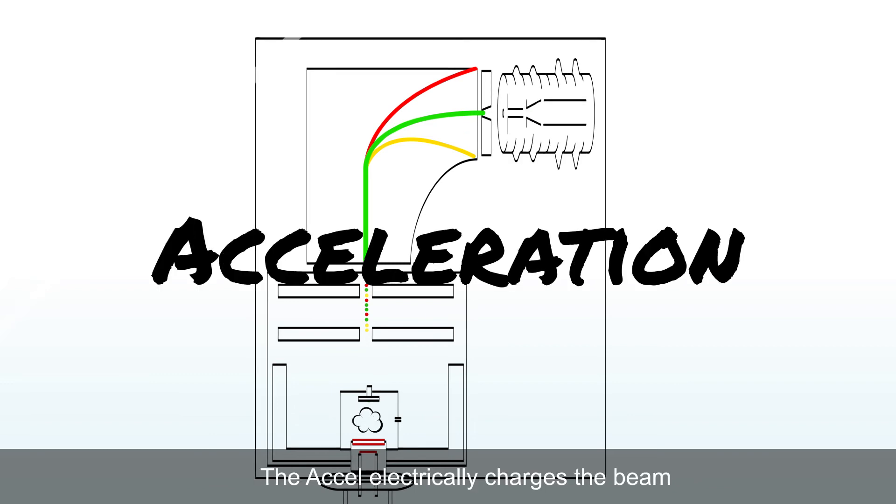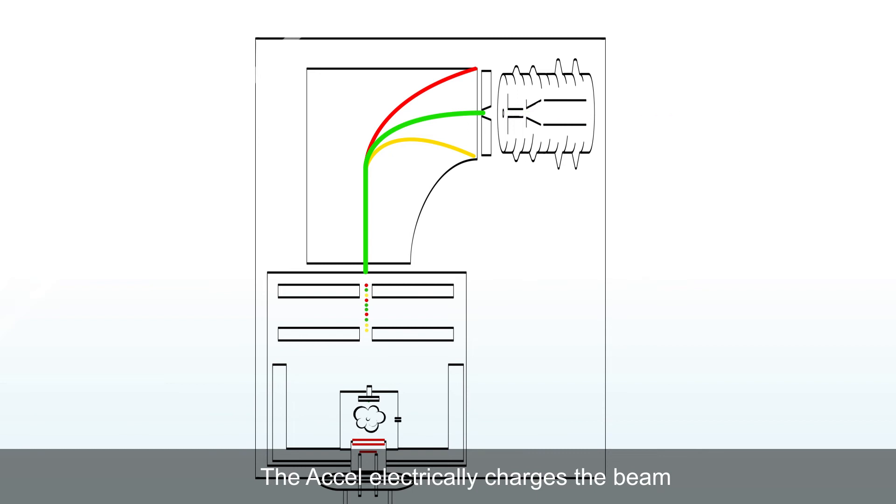Accelerating. The Excel electrically charges the beam to the final desired energy state and performs electronic focusing. The acceleration module, Excel, also isolates the red box high energy potential from beamline earthground.